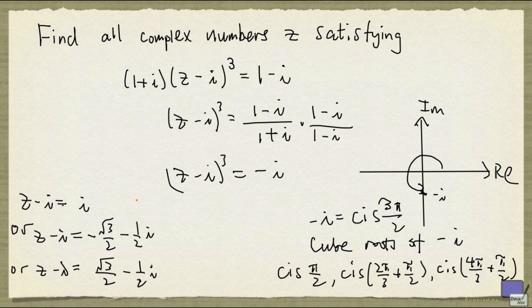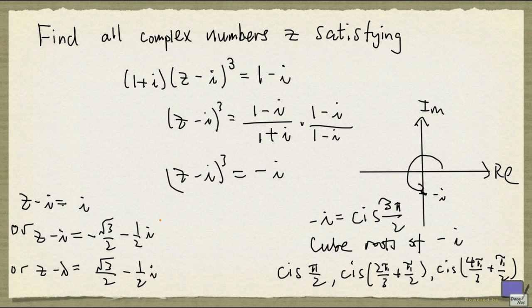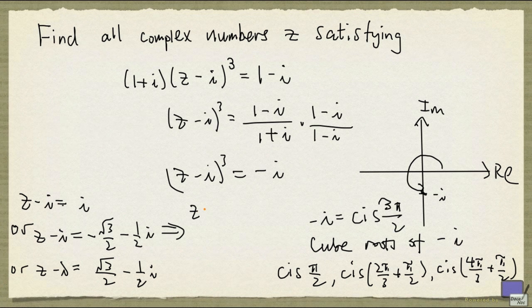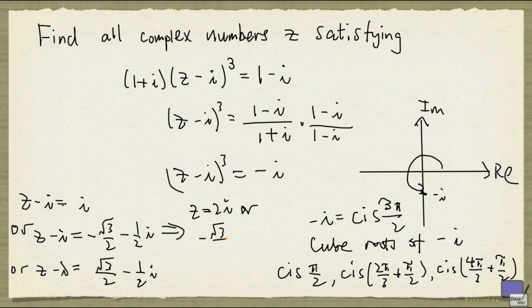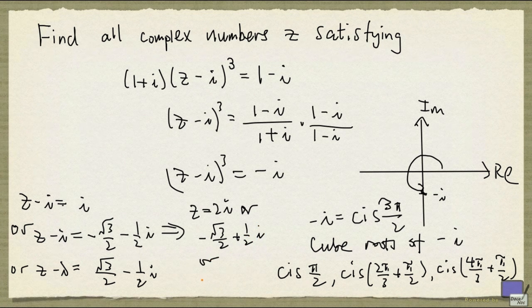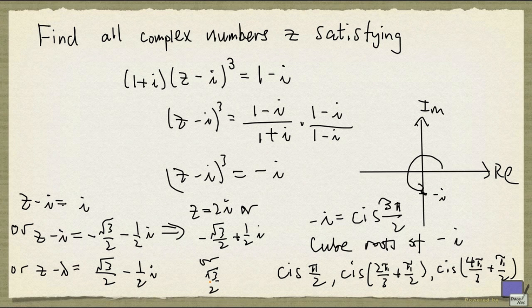And now if I simplify this, this gives me z equal to 2i, or minus square root of 3 over 2 plus 1 half i, or square root of 3 over 2 plus 1 half i.